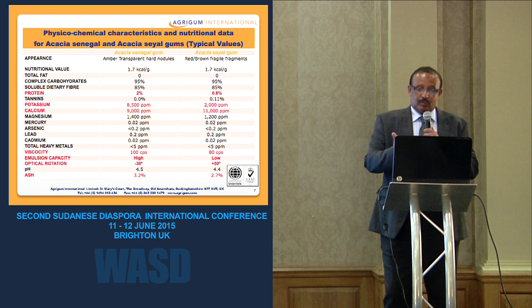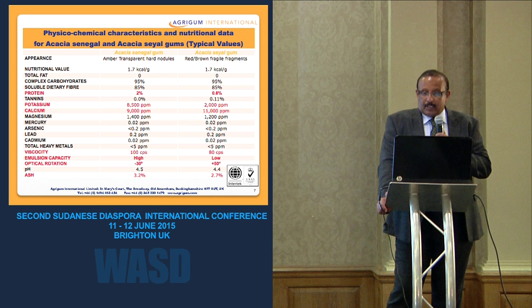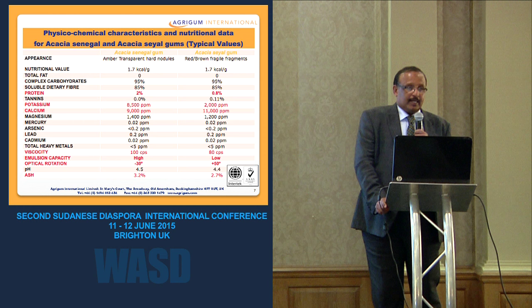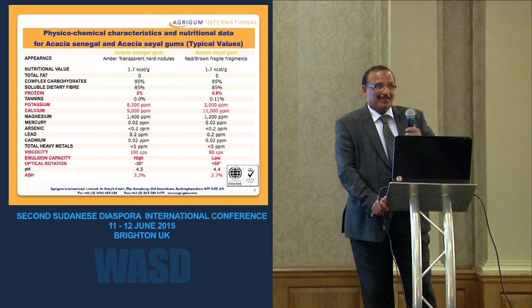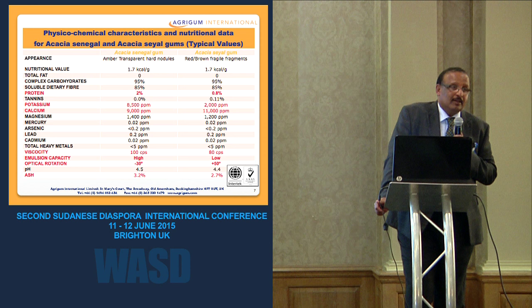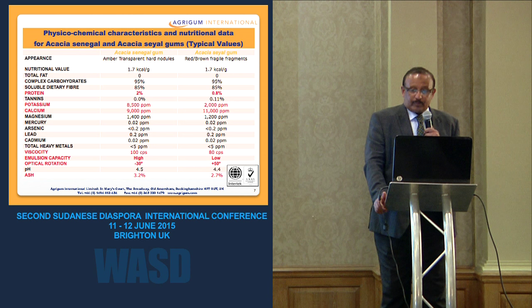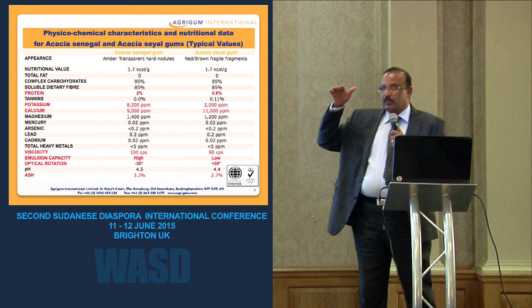This table shows physicochemical characteristics and nutritional data comparing the two main species, Acacia Senegal and Acacia Sayal. The calorific value is about 1.7 — it should be about 4 for polysaccharides, but because it's fiber, that's why it's low in calorific value.